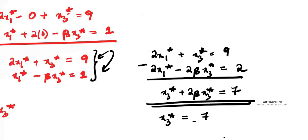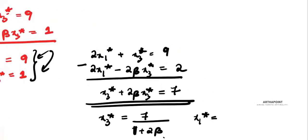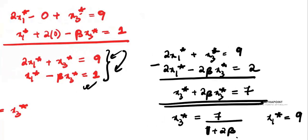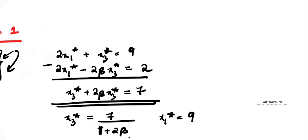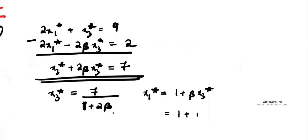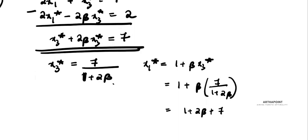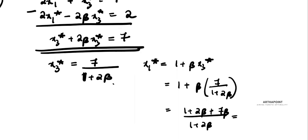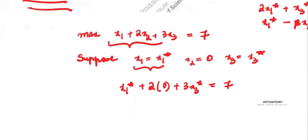So x3 star equals 7 upon (1 plus 2 beta). And x1 star equals 1 plus beta times x3 star, which is 1 plus beta times 7 upon (1 plus 2 beta), giving (1 plus 2 beta plus 7 beta) upon (1 plus 2 beta), which simplifies to (1 plus 9 beta) upon (1 plus 2 beta).